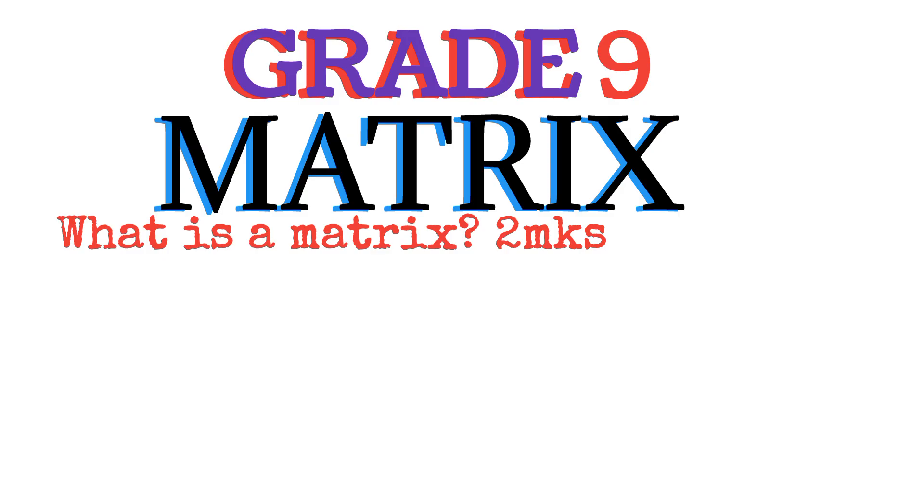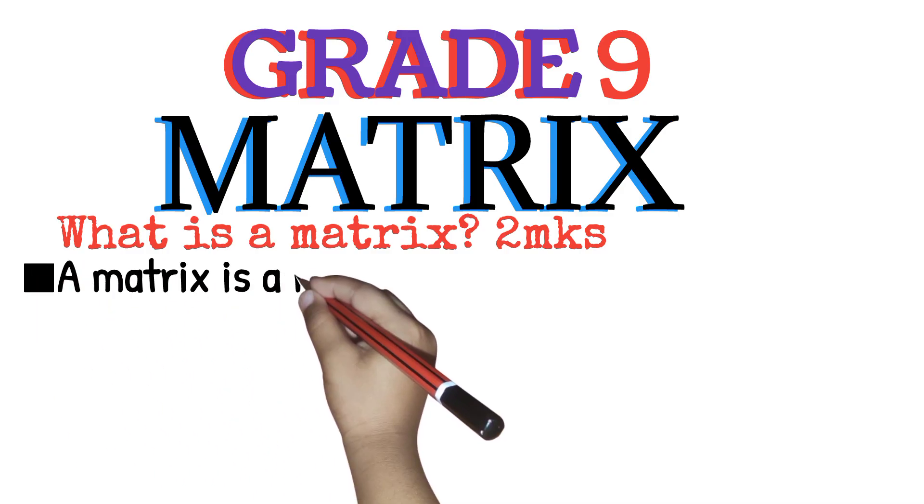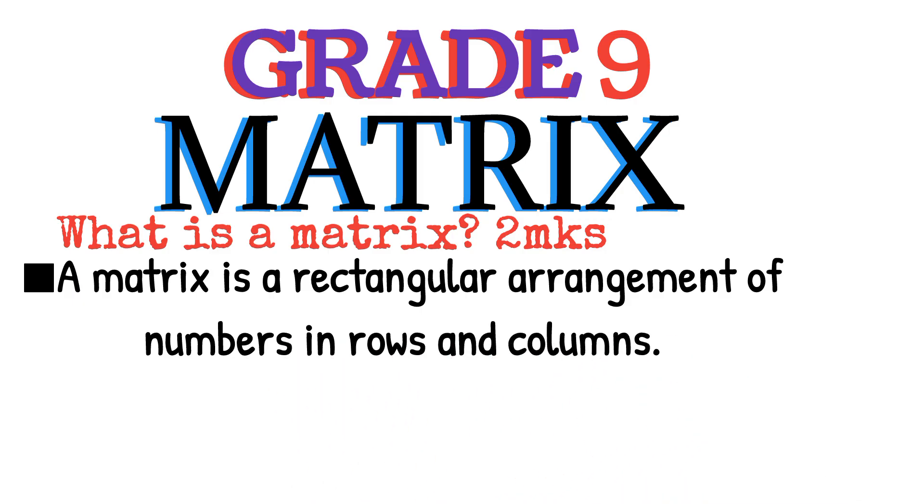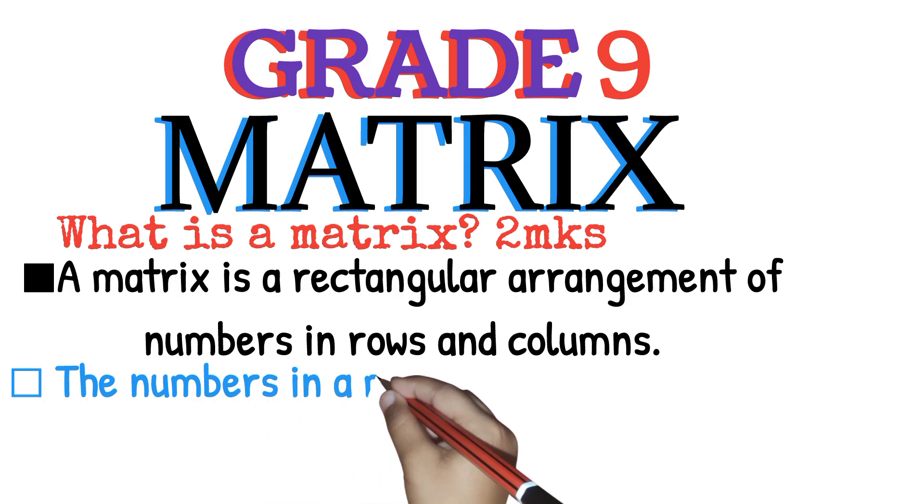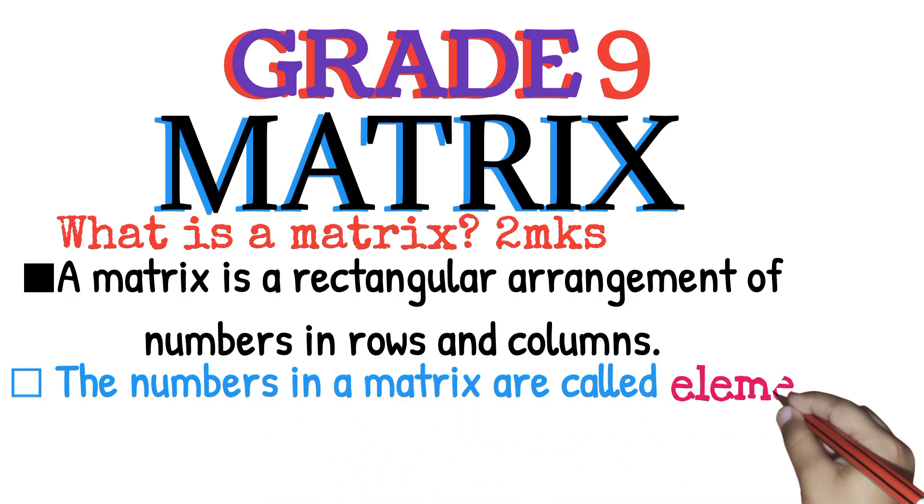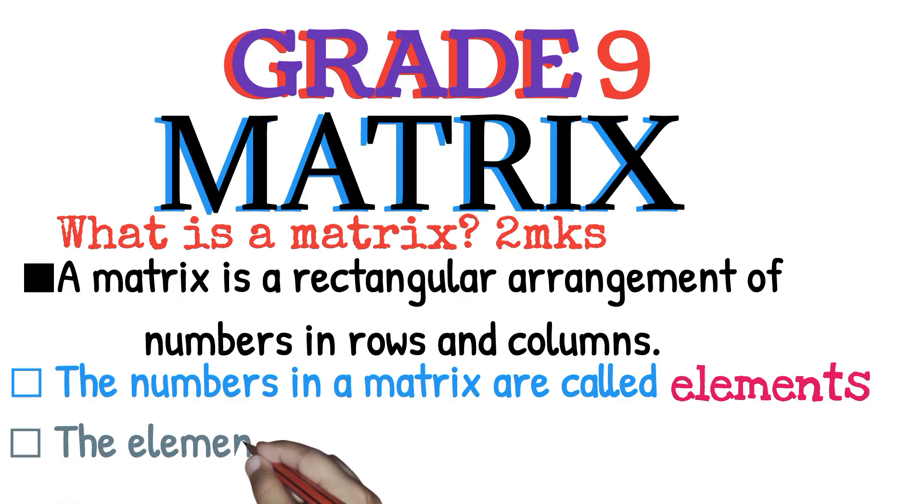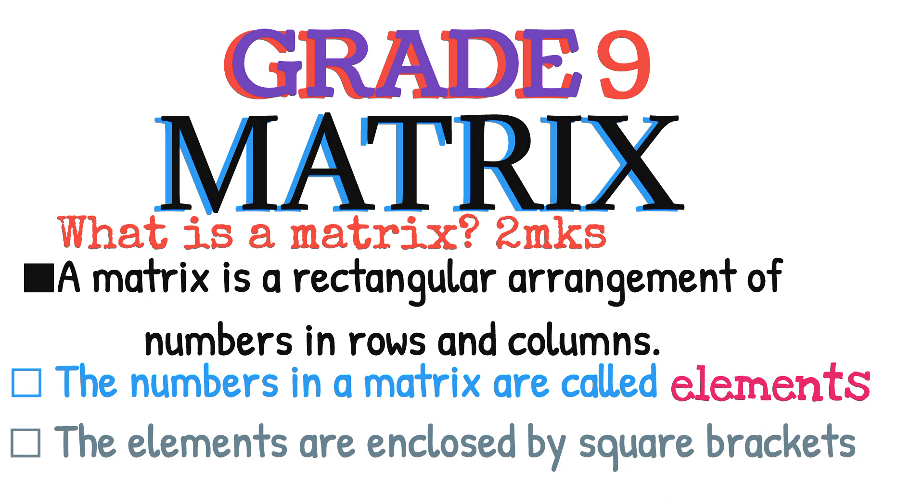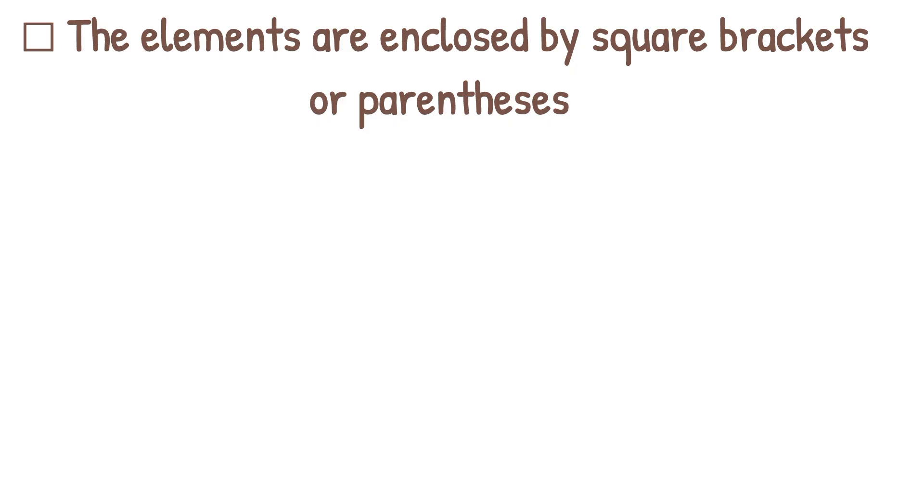First, the definition of a matrix. What is a matrix? A matrix is a rectangular arrangement of numbers in rows and columns. The numbers in a matrix are called elements. The elements are enclosed by square brackets or parentheses.